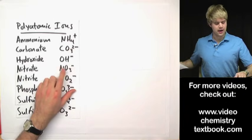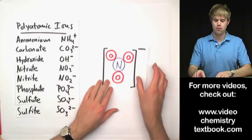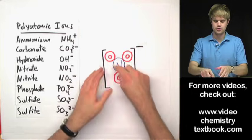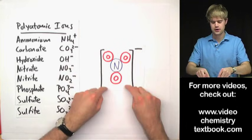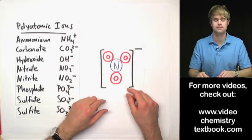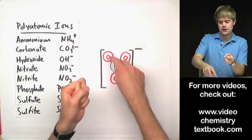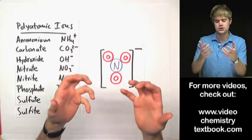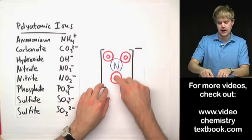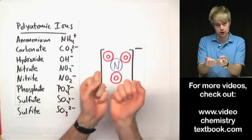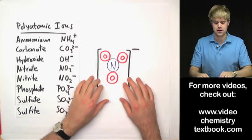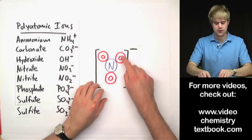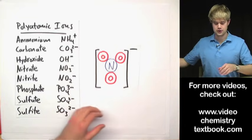Let's take nitrate, NO3 1-. We can draw the atoms in nitrate like this: one nitrogen and three oxygens, and this whole thing is surrounded by brackets because it has a charge of 1-. So nitrogen and these three oxygens are a clump together. What's holding the oxygens together with the nitrogen? What's the glue that connects these atoms? It is actually covalent bonds attaching the oxygens to the nitrogen.